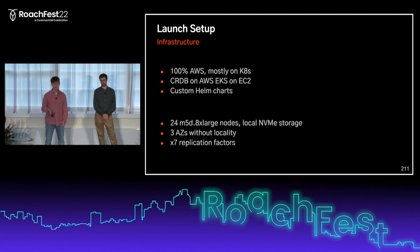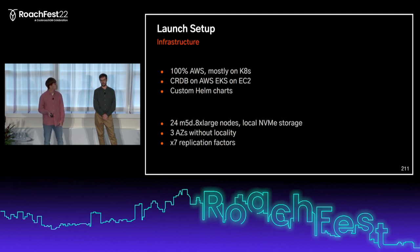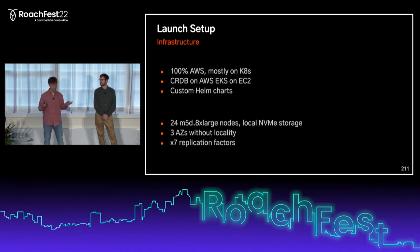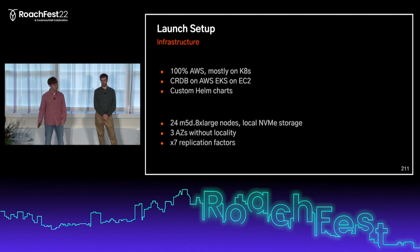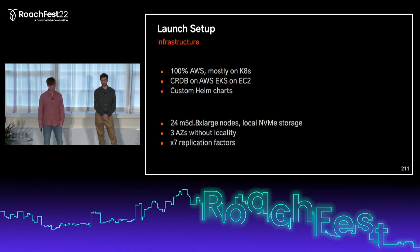This is how our cluster looked on the day of launch — not how it looks today. We decided to use three AZs without locality configuration because we wanted one Helm chart that handles everything for our CockroachDB StatefulSet, but we failed to incorporate localities into that single chart. We figured an AZ failure was unlikely, so we moved on. Instead, we decided to use a replication factor of seven to prepare for the usual instance retirements and similar operations.